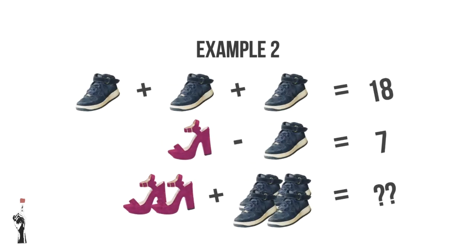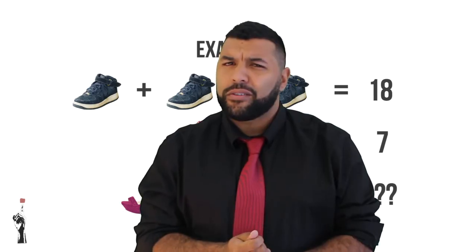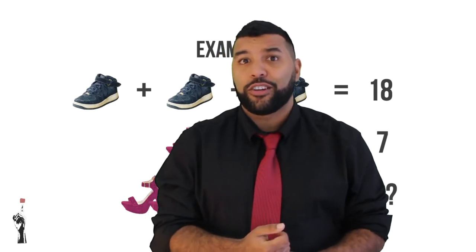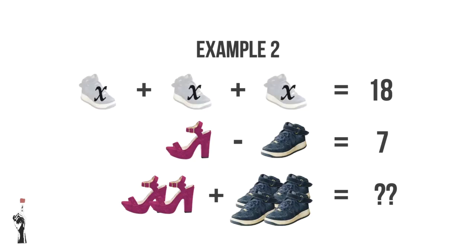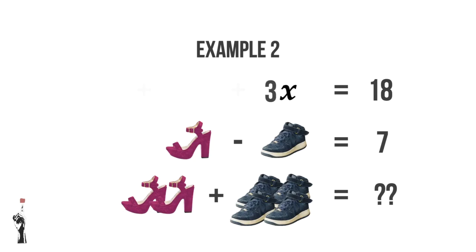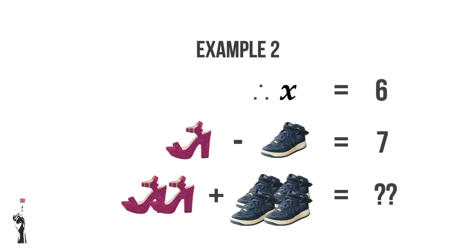In this example, in the first line we can see that black shoe plus black shoe plus black shoe is equal to 18. However, we don't quite like using the word black shoe, so let's replace it with a variable. We're going to use X. So we know X plus X plus X is equal to 3X. So 3X is equal to 18, which means X must be equal to 6.